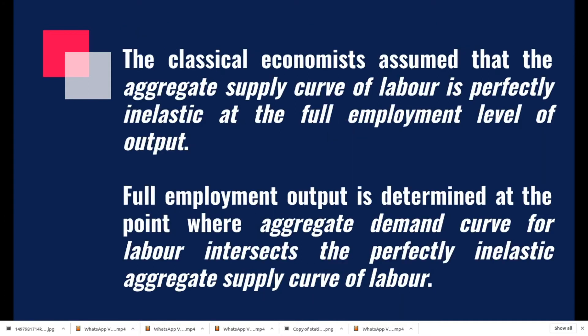The classical economics assumed that the aggregate supply curve of labour is perfectly inelastic at the full employment level of output. Full employment output is determined at the points where aggregate demand curve for labour intersects the perfectly inelastic aggregate supply curve of labour.